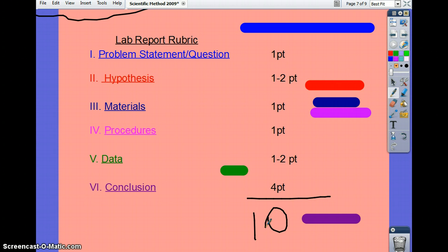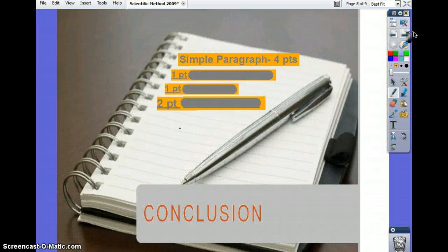What happens if you don't write a conclusion? Raise your hand if you go to me. You don't get the four points and you get a six. Which is what? A 60. A 60. You don't write the conclusion and you will end up with a 60. So what does the conclusion have to be? A simple paragraph. What does that mean? Five sentences.